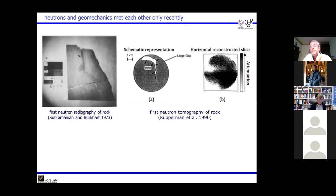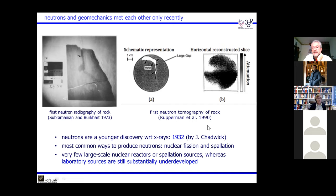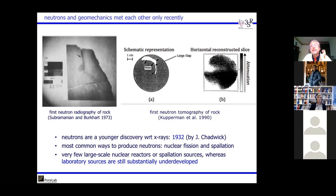A bit of history: the first neutron radiography of rock was in 1973 and the first neutron tomography of rock in 1990 — much more recent than X-rays (1895). Neutrons were only discovered in 1932. The most common ways to produce neutrons are nuclear fission and spallation, requiring very large-scale sources like a nuclear reactor. Laboratory neutron sources essentially do not exist.